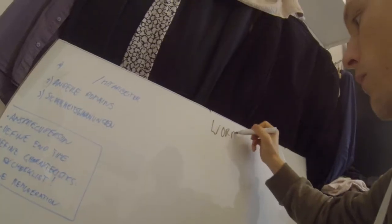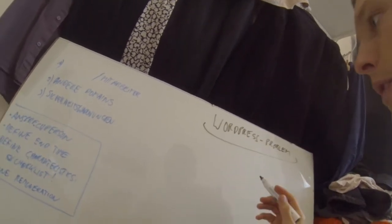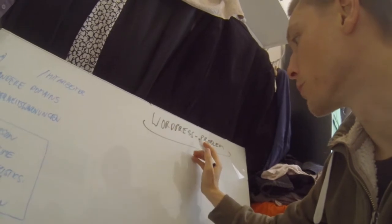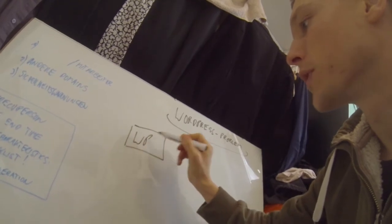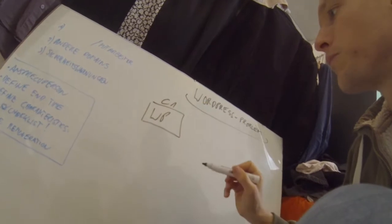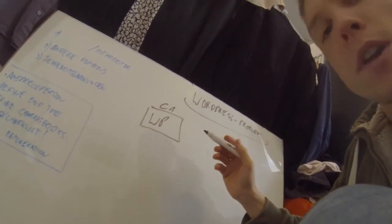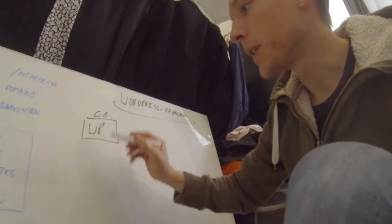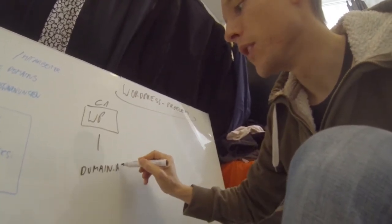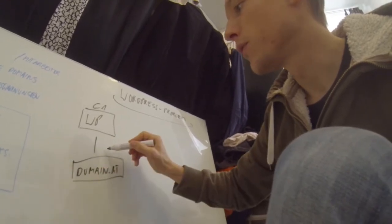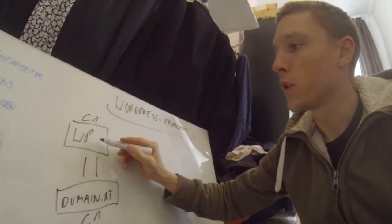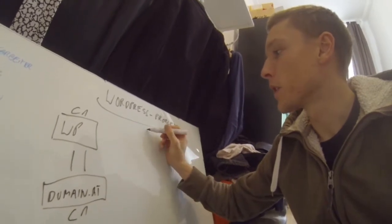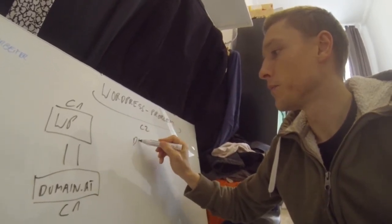Hey guys, welcome to the SeaBird vlog. I have a problem with WordPress - maybe you can help me. The problem is I've built a homepage with WordPress on a server with company one. Previously, when I did this, I also bought the domain from the same company, connected it to WordPress, and it worked. Today I have a different problem because I've built WordPress with company one but I have a domain with company two.